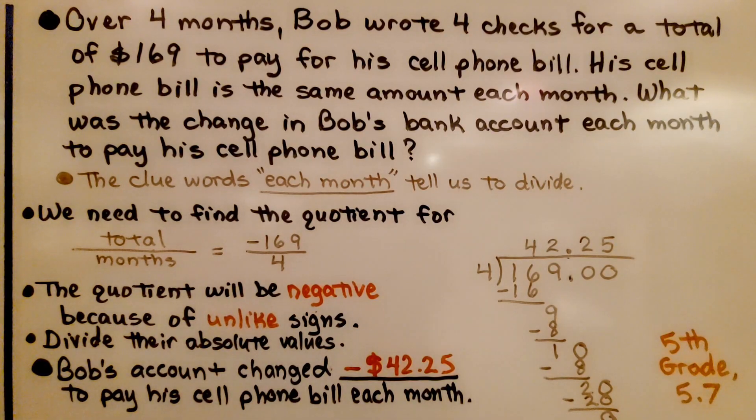Here's our first example. Over 4 months, Bob wrote 4 checks for a total of $169 to pay for his cell phone bill. His cell phone bill is the same amount each month. What was the change in Bob's bank account each month to pay his cell phone bill?